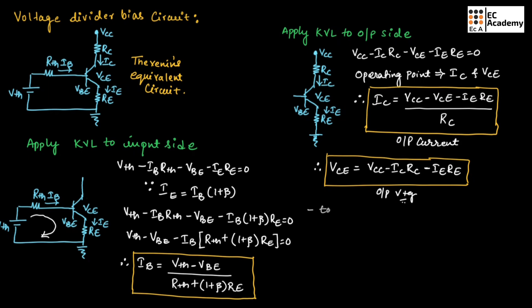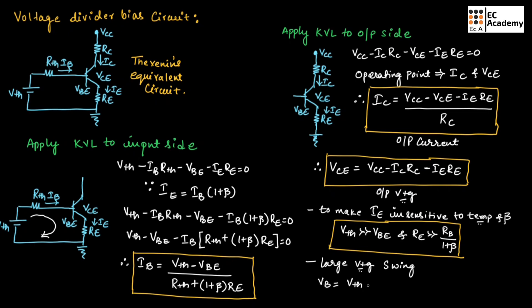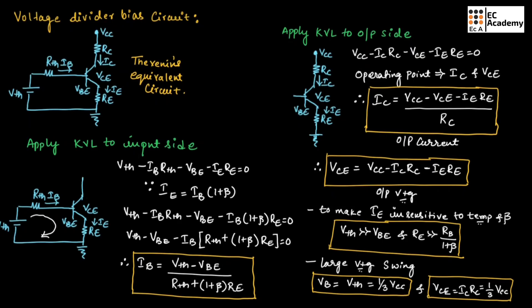To make Ie insensitive to temperature and beta variations, we need to keep Vth very much greater than Vbe, and Re should be very much greater than Rb divided by (1 plus beta). Also, to provide a large voltage swing, we keep Vbe equal to Vth, which should equal one-third of Vcc, and Vce should equal Ic×Rc, which should also equal one-third of Vcc. This concludes the topic of voltage divider bias circuit. Hope you have understood the topic. Thank you.